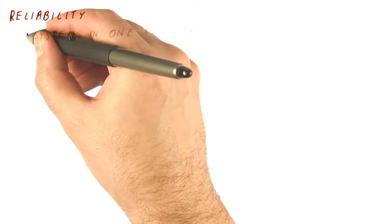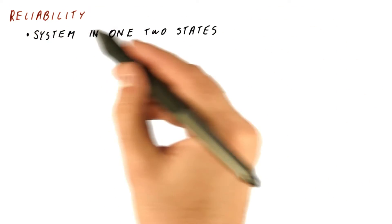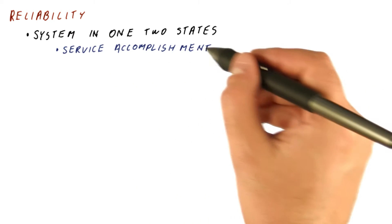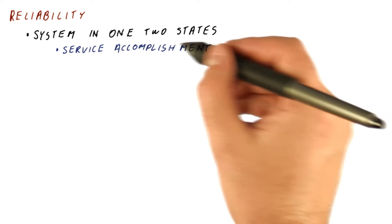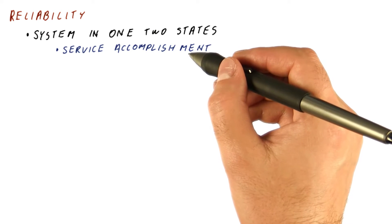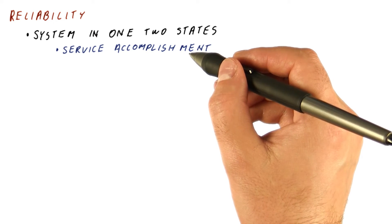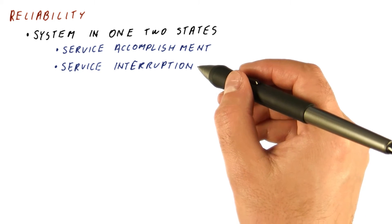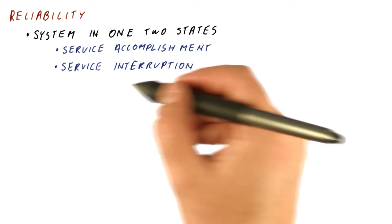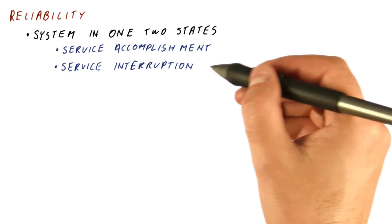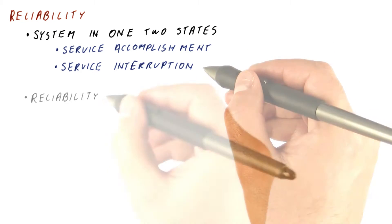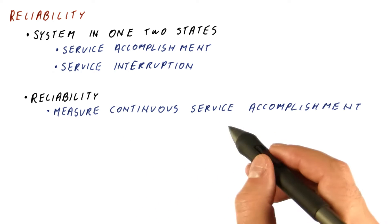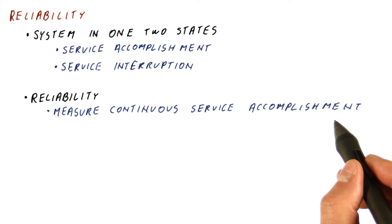To measure reliability, we consider the system to always be in one of two states. The normal state is the service accomplishment state, where the system is providing the service that we wanted to provide. The other state is service interruption — at this time, the system is not accomplishing the service that we expect from it. So reliability can now be defined by measuring continuous service accomplishment.